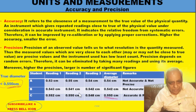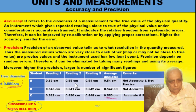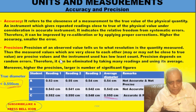So precision tells us to what resolution you can measure a quantity, whereas accuracy tells us how close you are to the true value. This point you should learn. If a person is more accurate, it means he is very near to the true value.